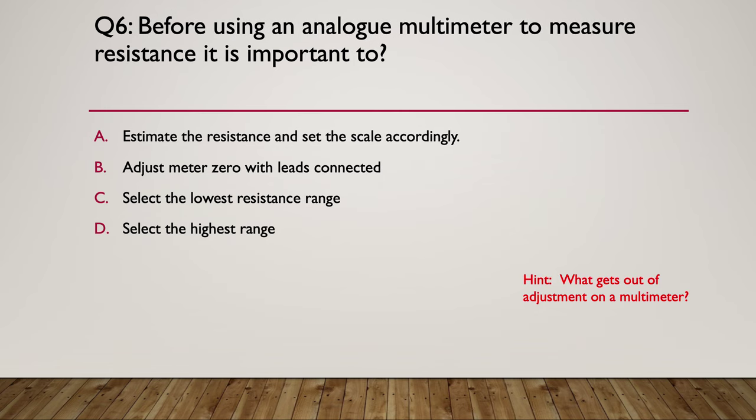Your hint: what gets out of adjustment on analog multimeters and needs to be constantly readjusted? The answer is B: adjust the zero with the leads connected. We don't know what leads are being used, so you put the leads together and zero out the meter — that way you're only measuring what the leads are connected to, not the leads themselves.